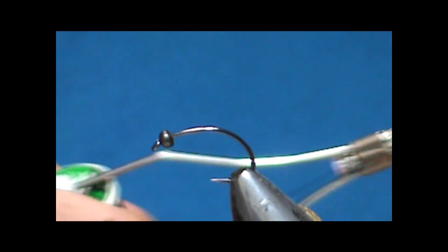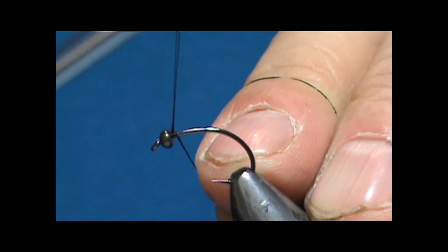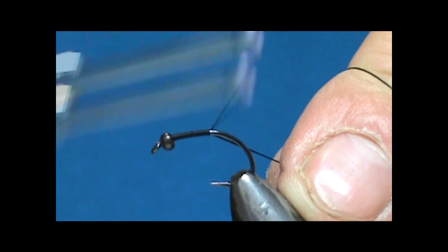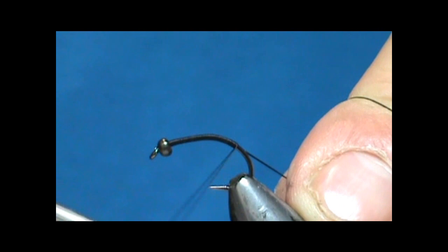I'm going to start out with black thread and this is 210. I want a heavy thread because the heavy thread is going to help me to make a tapered body. I'm going to put a base of thread down and bring that slightly around the bend.